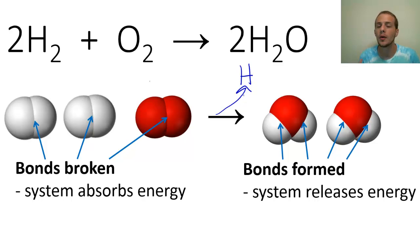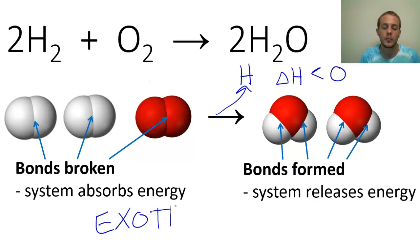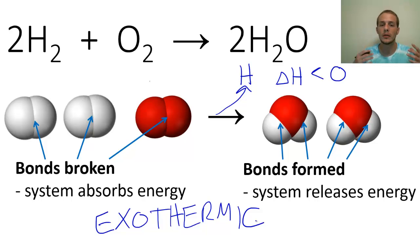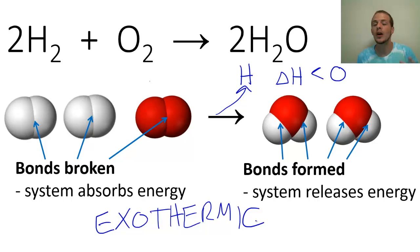I actually have a video where I carry this reaction out — I can put a link in the description box. This reaction releases a lot of energy, meaning the sign of delta H is negative — energy is released into the surroundings, so we call it an exothermic process. In an exothermic process, the energy released when bonds form in the products is far greater than the energy absorbed during bond breakage in the reactants.